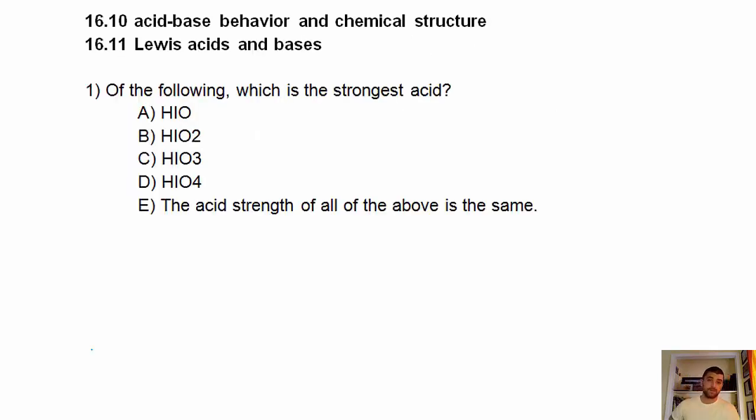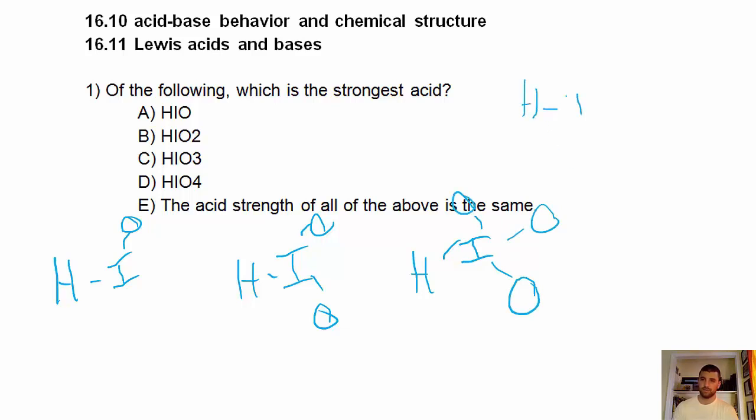All right, so it says, of the following, which is the strongest acid? So if I were to draw these out, I got HIO, and then O off of that versus HIO2 with two O's off of that. And HIO3 with three O's, and then HIO4 with four O's off of that.